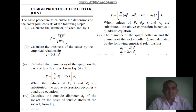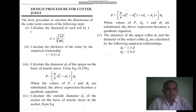Based on the tensile stress condition, the equation is rearranged: sigma t = P / (π/4 × d²), and solving gives the rod diameter d. The second step is to calculate the thickness of the cotter by the empirical relation: t = 0.31 × d, where d is the diameter of the end rod.